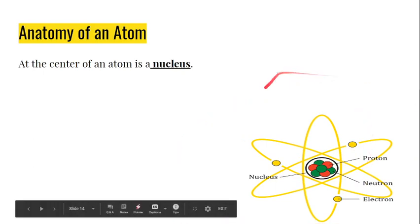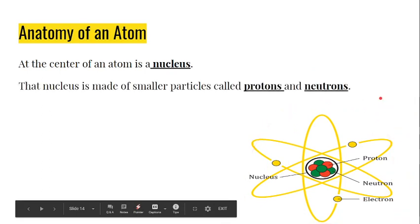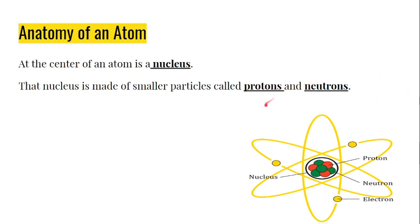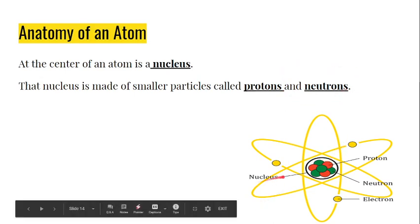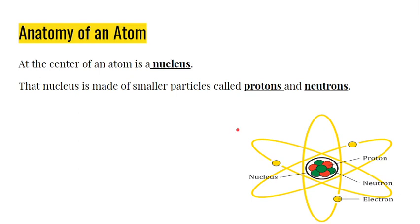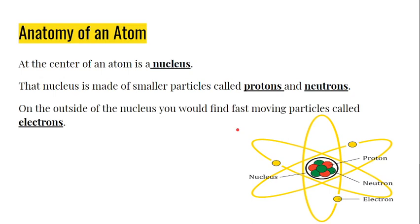I want you guys to draw this in your notes — it's a very important diagram to get. The nucleus is made of smaller particles called protons and neutrons. Just like we see here, they've got the nucleus, and there are protons in here represented by the color red, and neutrons represented by the color green. In your normal atom you will see those things there. Also, on the outside of the nucleus, you will find fast-moving particles called electrons. You have the nucleus with the protons and neutrons in there, and they stick together.